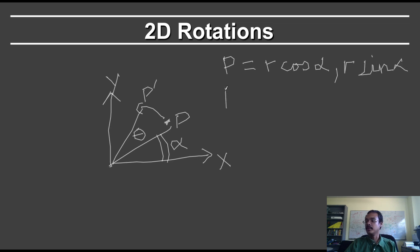So what is P prime now equal to? Well, so now this combined angle for P prime is going to be equal to alpha plus theta. So this is going to be equal to R cosine. And now we say this is alpha plus theta. And it's going to be equal to the sine of alpha plus theta. The coordinates are going to be equal to that.